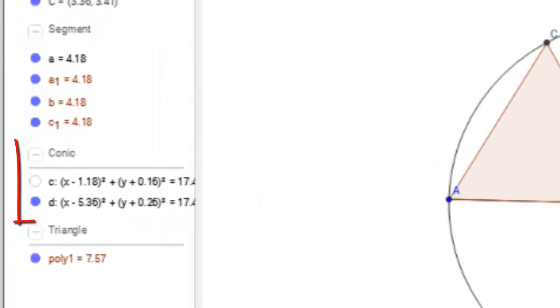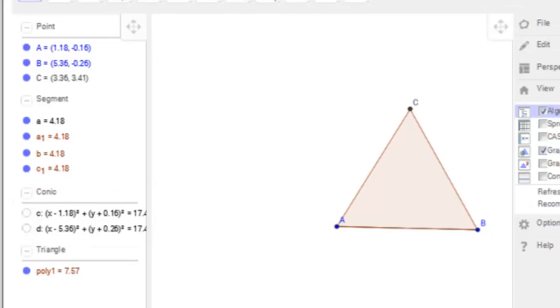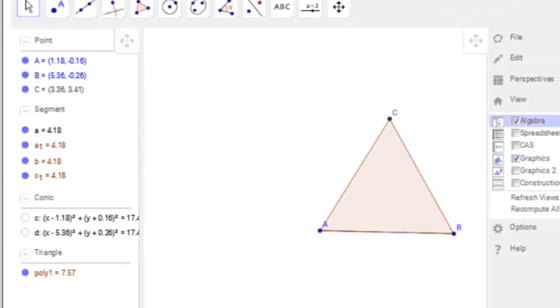Here I'm deselecting the circle's coordinates to reveal only the triangle. Now the display has been simplified to only show the triangle.